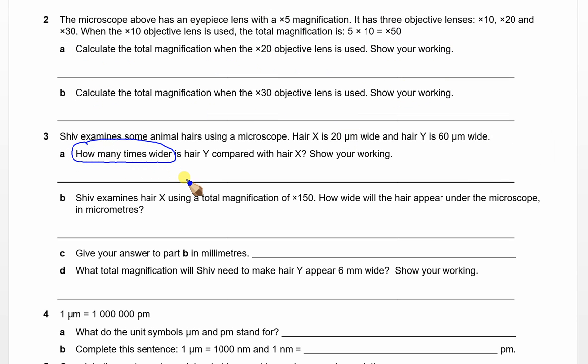How many times wider is hair Y compared with hair X? Show your working. We've got 20 microns and 60 microns. How many times wider is hair Y? Pretty straightforward: 60 divided by 20 and you get the answer 3. So it's 3 times wider. You can quite clearly see you're just multiplying by 3. Just a bit of arithmetic there.